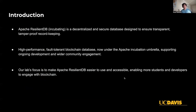Apache ResilientDB, which is now under the Apache Incubation umbrella, is a decentralized secure database designed for transparent and tamper-proof record-keeping. It's a high-performance blockchain database that supports fault-tolerant operations, which makes it ideal for distributed systems research. Being in the Apache Incubation also means ResilientDB has the backing of the Apache community, which brings additional resources and credibility to the project.